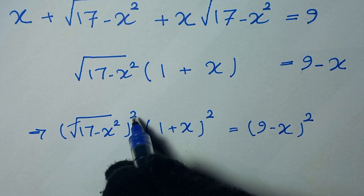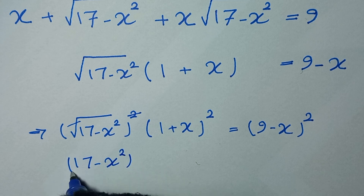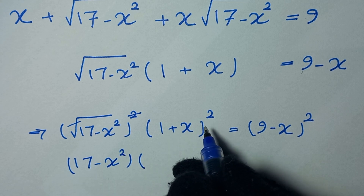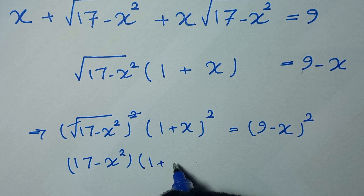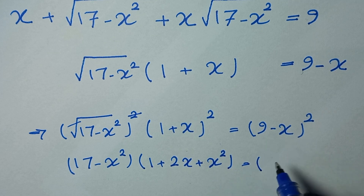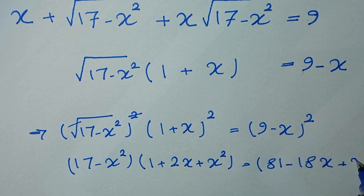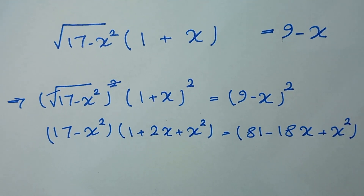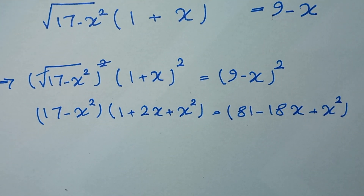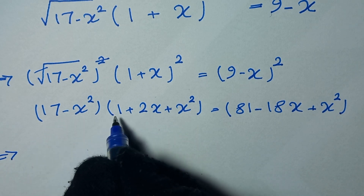This square root will cancel and it will be 17 minus x squared, times 1 plus x to the power of 2, which expands to 1 plus 2x plus x squared, is equal to 9 minus x to the power of 2, which expands to 81 minus 18x plus x squared.